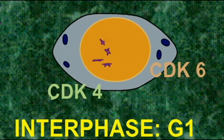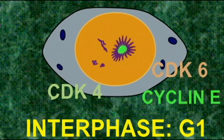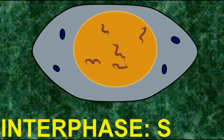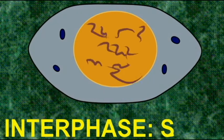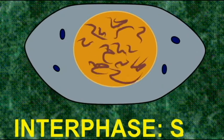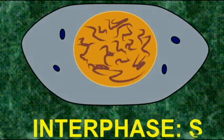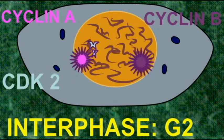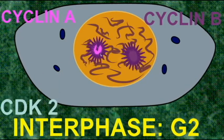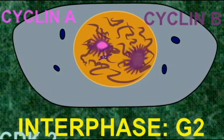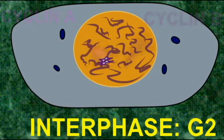Cyclins do not act alone. In fact, they have to interact with kinases called cyclin-dependent kinases or CDKs. For example, CDK4 and 6 would interact with cyclin D. CDK2 would interact with cyclin A. So cyclins must interact with additional kinases in the nucleus.